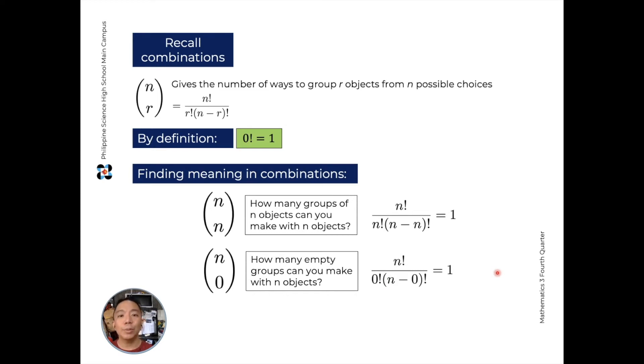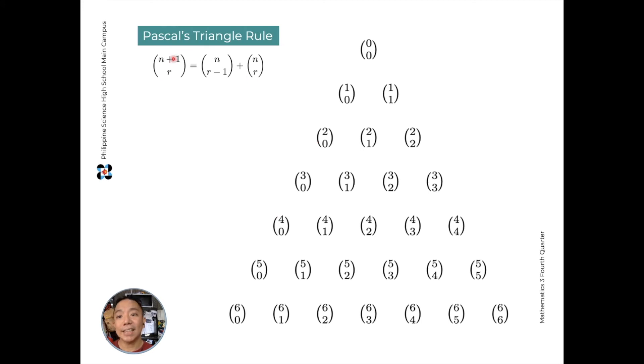With that, let's revisit the last thing that we established in our lesson on combinations, what I called Pascal's Triangle Rule. That n plus 1 choose r is equal to n choose r minus 1 plus n choose r. First, 0 choose 0 is equal to 1. It's like you have no choices, but I'll make a group with no content. I can only make one group.